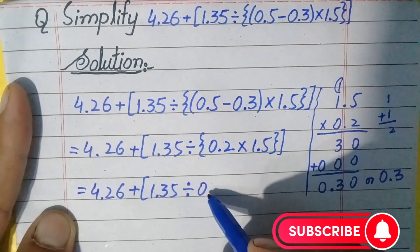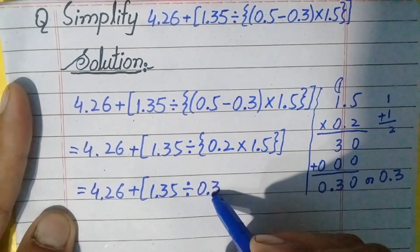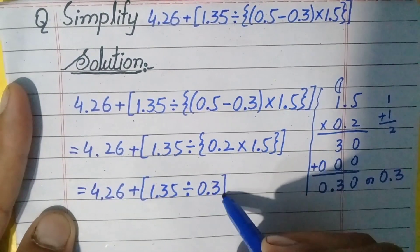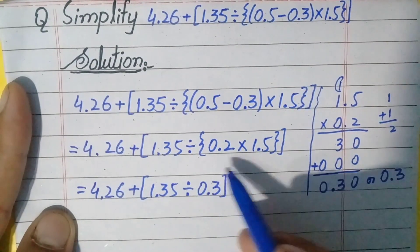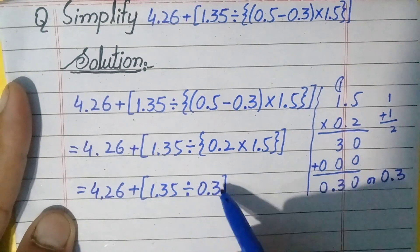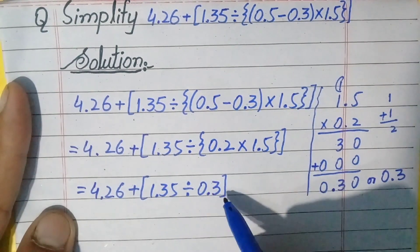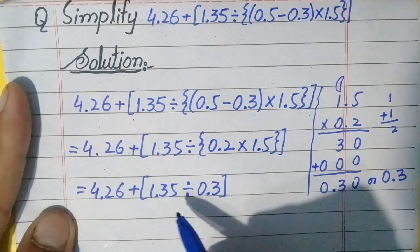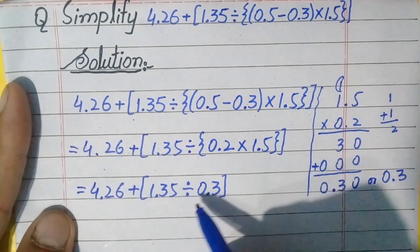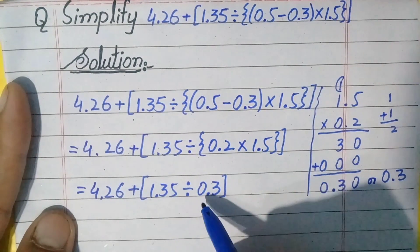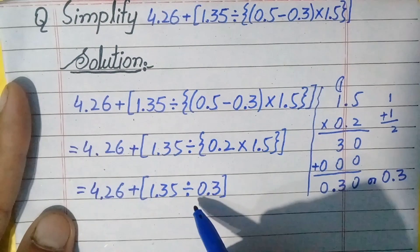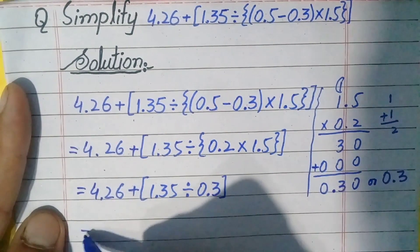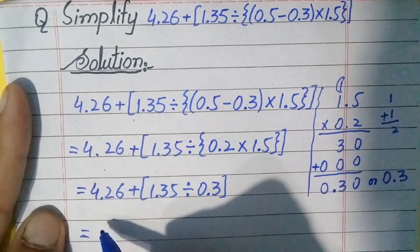Now the braces are also eliminated. Only square brackets are left. What is inside the square brackets is the division of these two decimal numbers. We will perform the division of these two numbers in the rough work, and write down the remaining part the same: 4.26 plus.